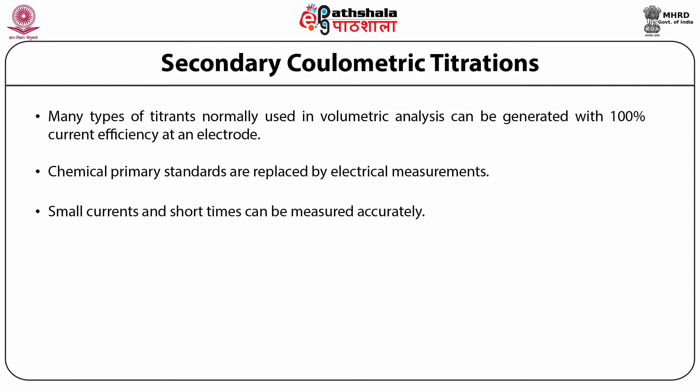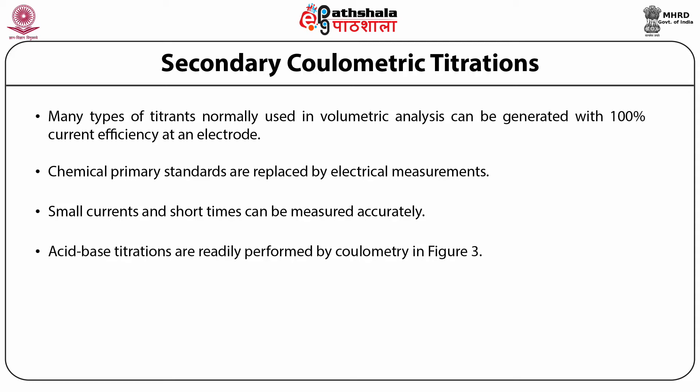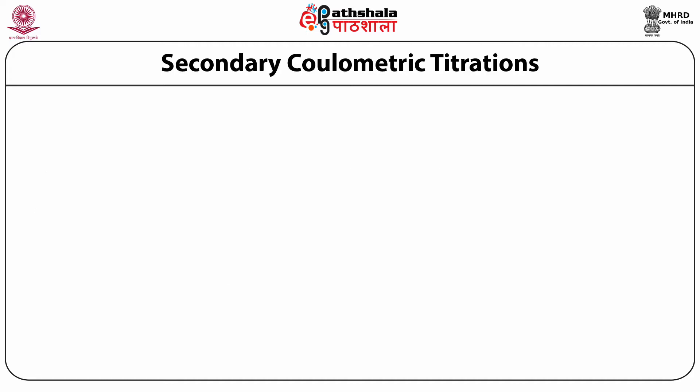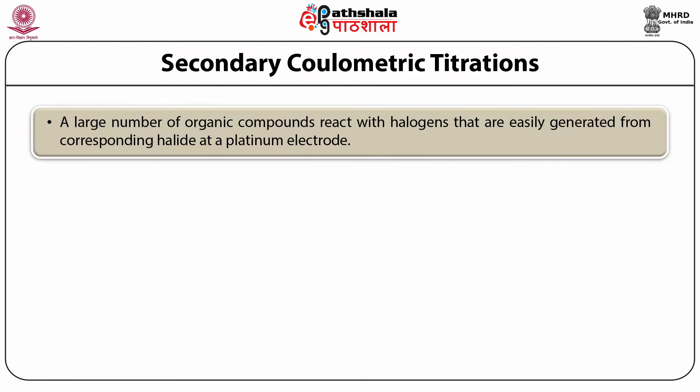Small currents and short times can be measured accurately. In principle, the accuracy is limited by the uncertainty in the value of Faraday's constant. In practice, the accuracy is limited by the reproducibility of the endpoint. Acid-base titrations are readily performed by coulometry. Both acids and bases can be generated either internally within the solution or externally, and the external apparatus is particularly convenient for generating small amounts of carbonate-free base as needed. Similarly, a large number of organic compounds react with halogens that are easily generated from the corresponding halide at a platinum electrode.